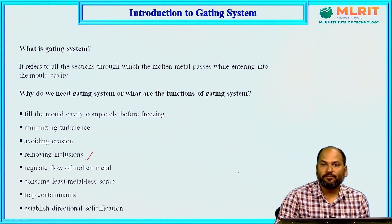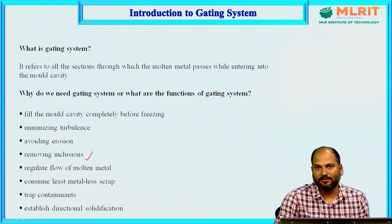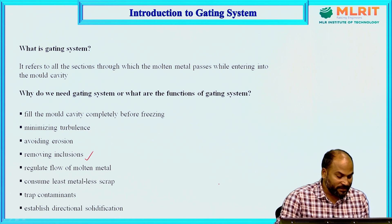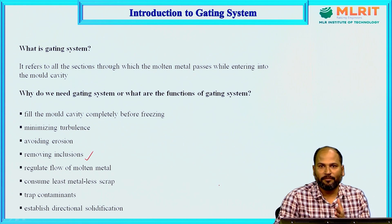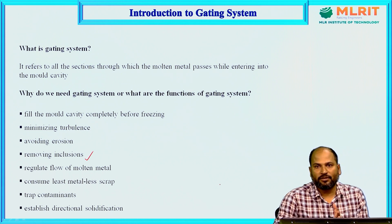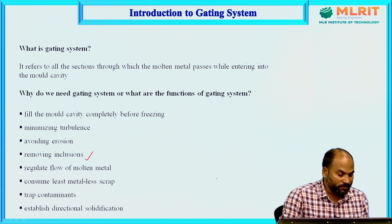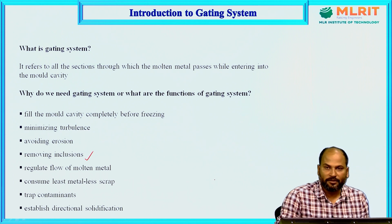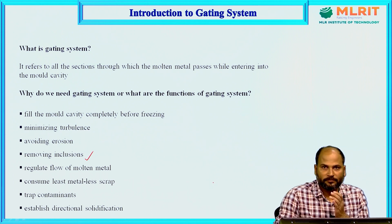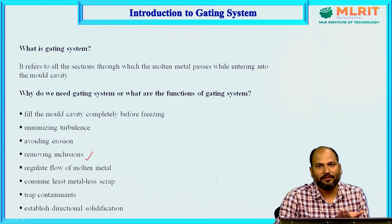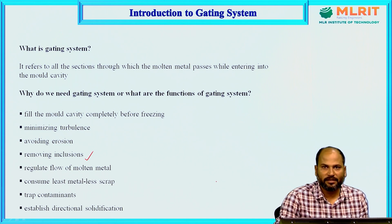The next function is that scrap should be minimized. Since many parts exist in the gating system, the purpose of designing it is to minimize scrap as much as possible. Next is to trap contaminants — any foreign or mixed particles not required in the final casting should be removed. The last and probably most important function is to establish directional solidification, meaning solidification should start in parts farthest from the riser, then progress toward the riser, and finish last in the riser itself.